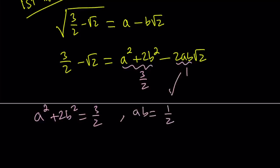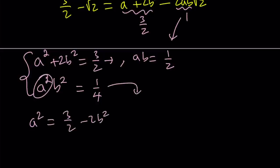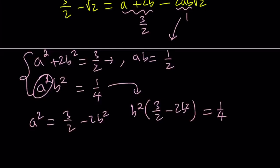We can square both sides of ab = 1/2, giving us a²b² = 1/4. This is a system in two variables, and we can turn it into a quadratic equation. We isolate a² from the first equation, writing it as 3/2 minus 2b², and then plug it in to get b² times (3/2 minus 2b²) = 1/4. Then set b² equal to c.